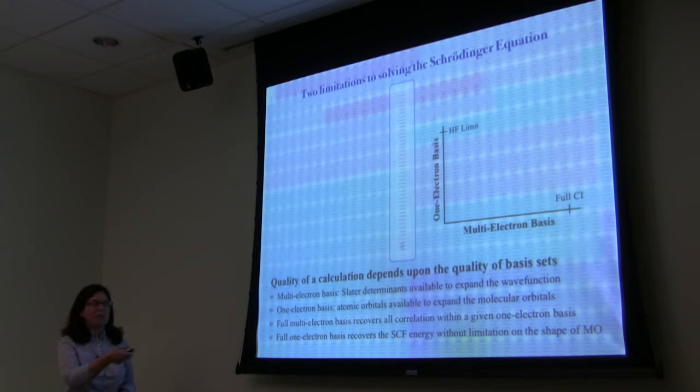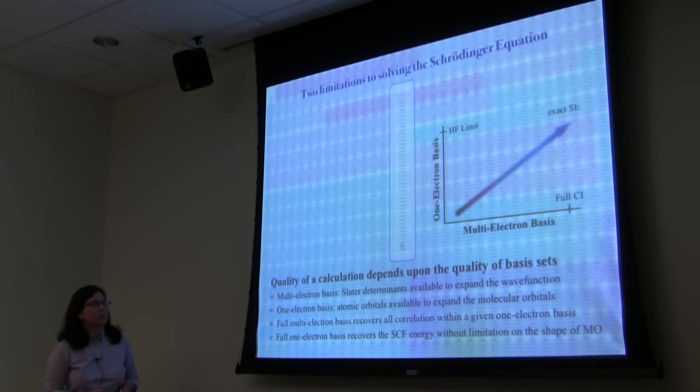Today I'm going to talk about the one-electron basis, and on Wednesday Trent is going to talk about the multi-electron basis with his talk on configuration interaction. If you go both ways in both dimensions, you finally solve the exact non-relativistic Schrödinger equation.